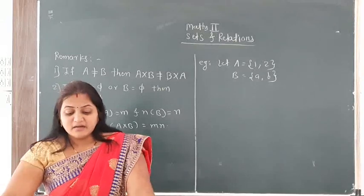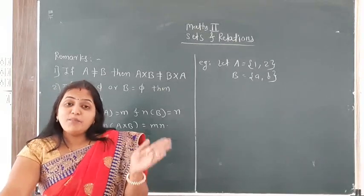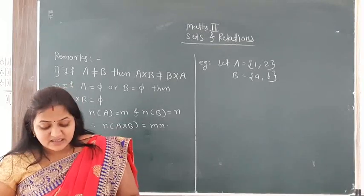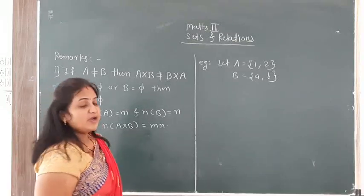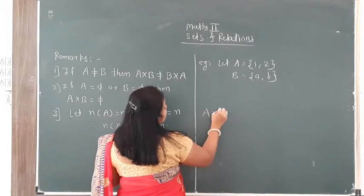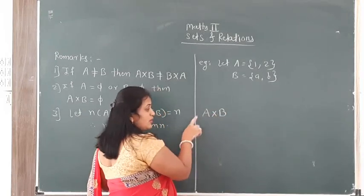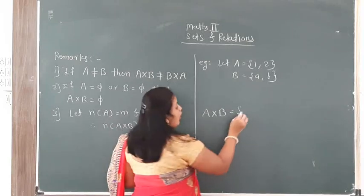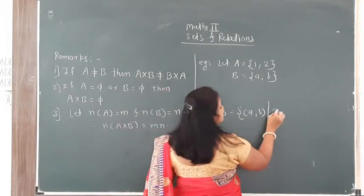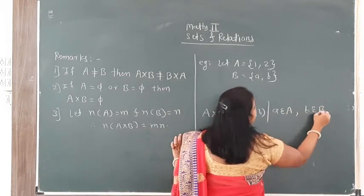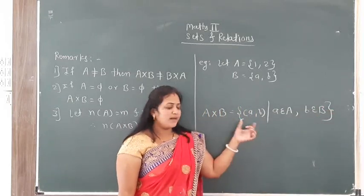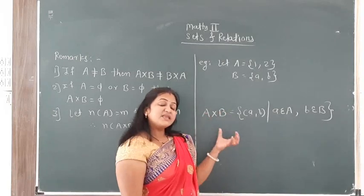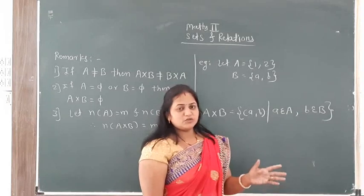Let A and B be any two non-empty sets. Then the set of all possible ordered pairs such that A belongs to set A and B belongs to set B — this is called the Cartesian product of A and B, and it is denoted by A cross B. A cross B is called the Cartesian product of A and B, containing all possible ordered pairs such that A belongs to set A and B belongs to set B.